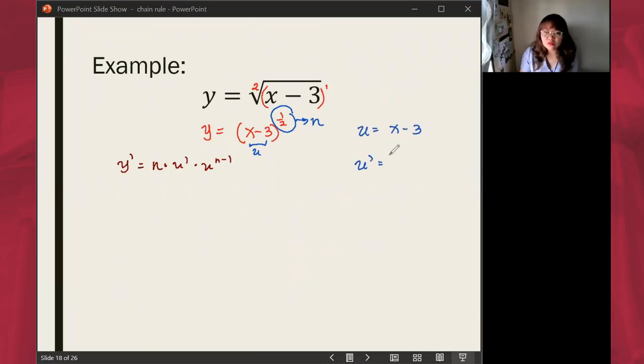What is u prime? Let's identify u prime. x will just be 1 by identity rule, and negative 3 is a constant, and the derivative of a constant is just 0. So u prime is just 1.